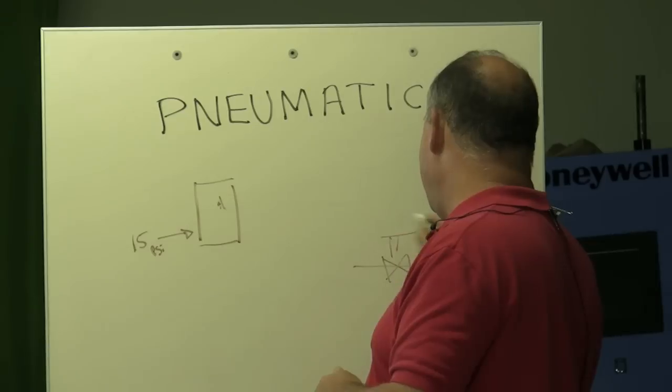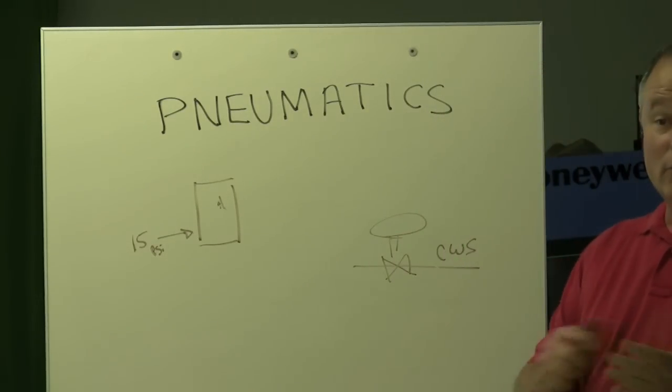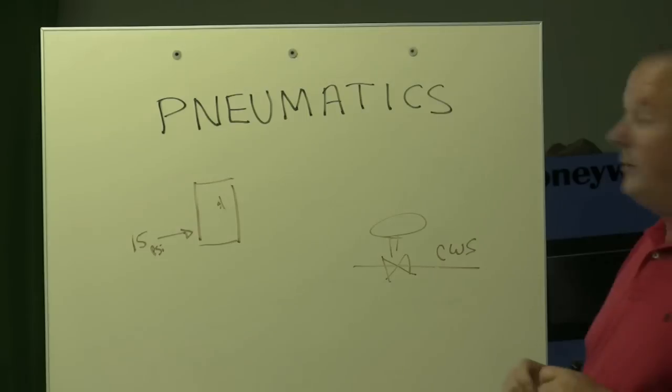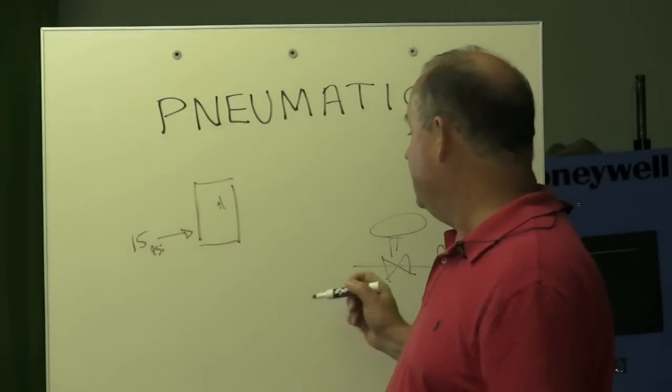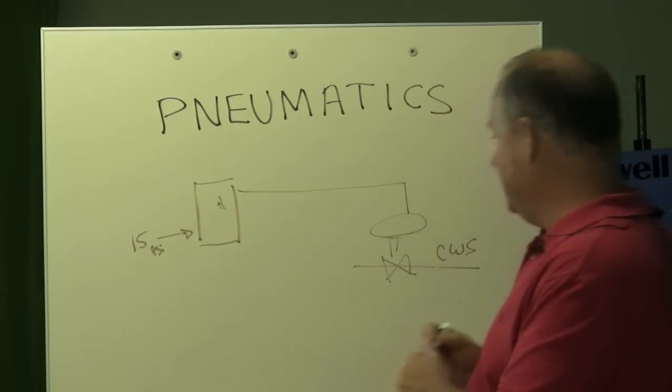We're going to have some kind of actuator over here with some kind of spring range. We'll choose the spring range based on whether it's normally open or normally closed. We don't really care what it is for this application. There's our thermostat and here's our branch line that comes over.